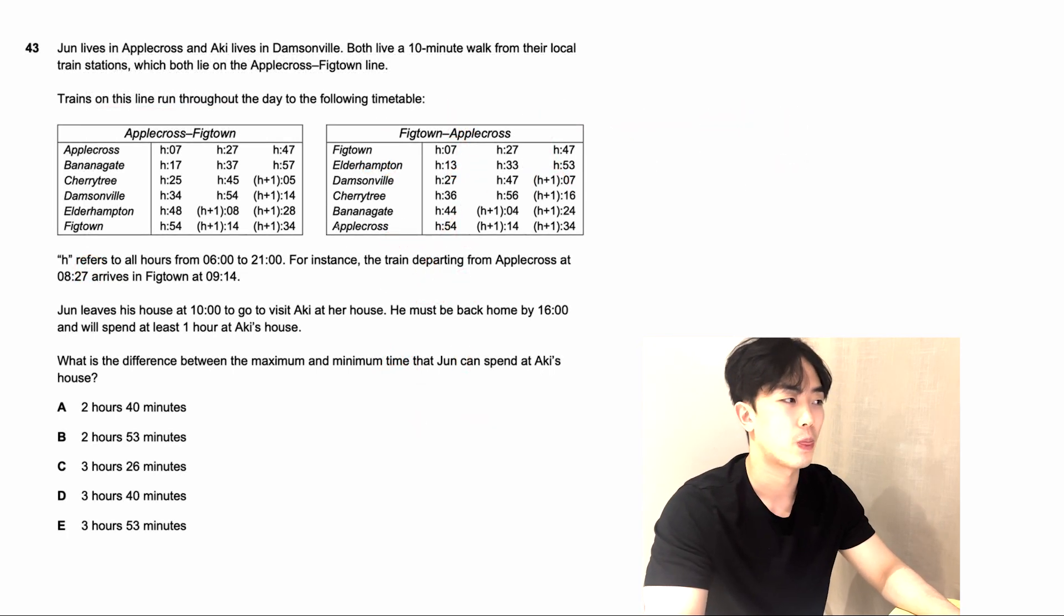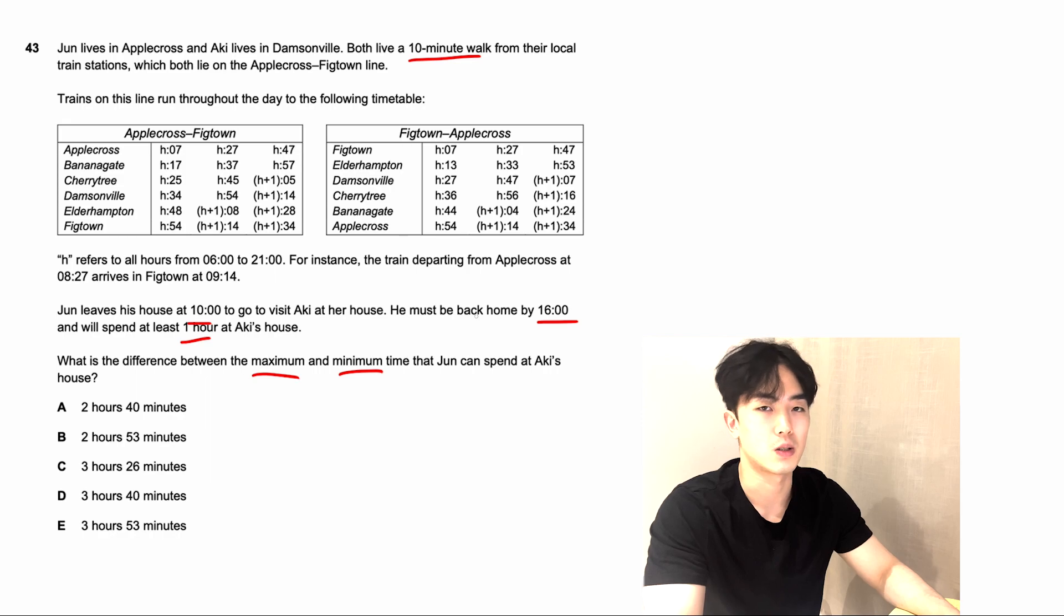Moving on to question number 43. Jun lives in Appercross and Aki lives in Damesonville. Both live a 10 minute walk from their local train stations, which both lie on the Appercross Thicktown line. We have a chart with a timetable showing the times the train leaves and arrives at each city. Jun leaves his house at 10 to go visit Aki. He must be back home by 4 o'clock and will spend at least one hour at Aki's house. What is the difference between the maximum and minimum time that Jun can spend at Aki's house? Let's start off with the maximum time.